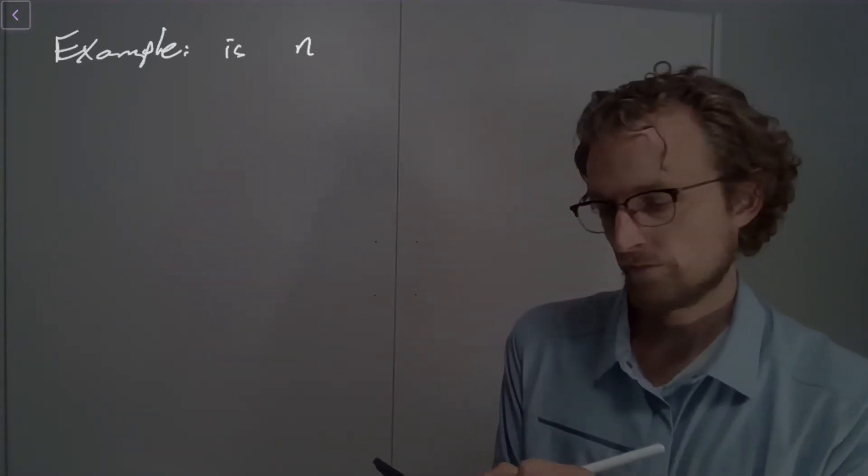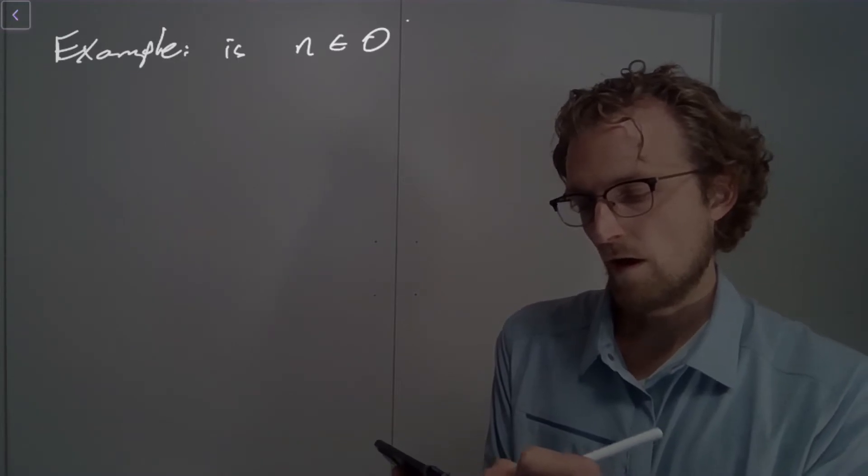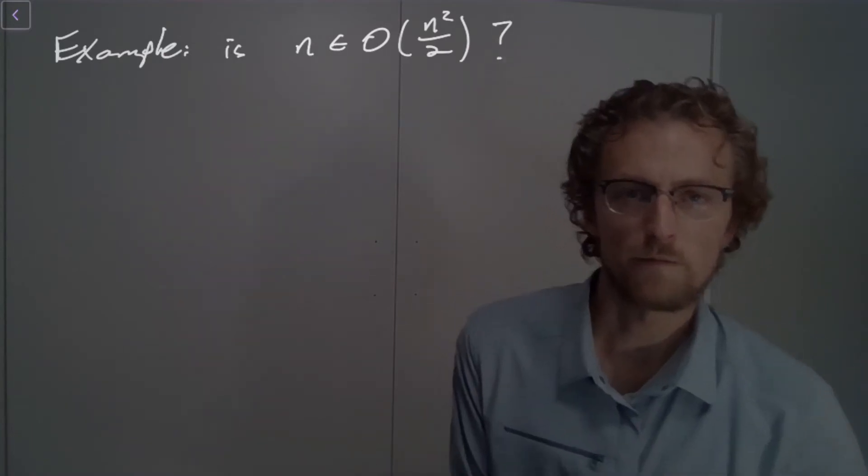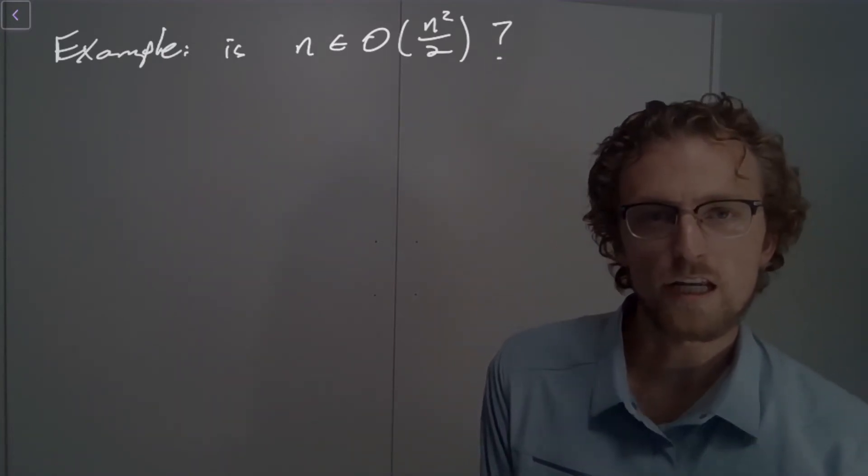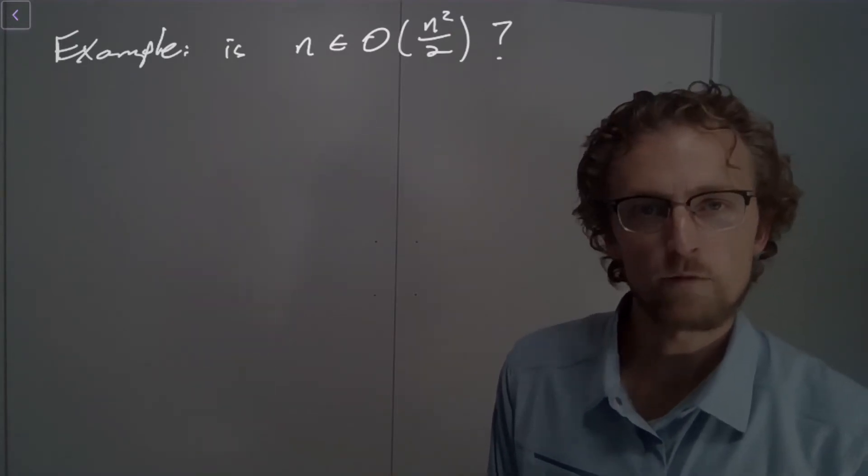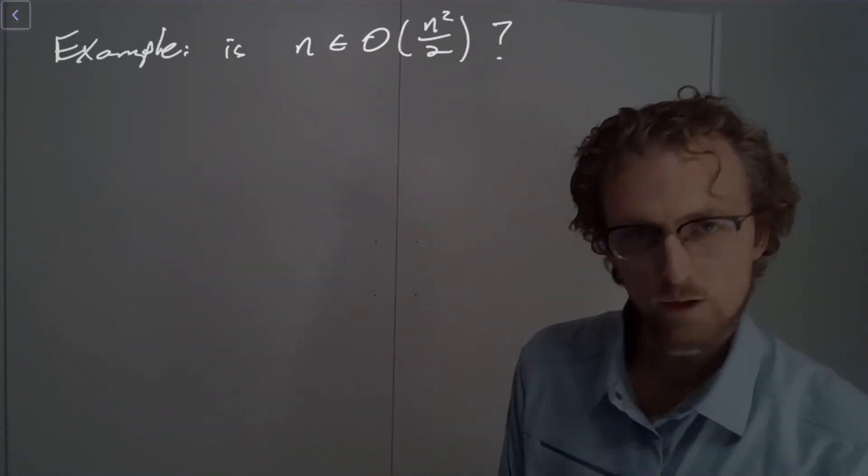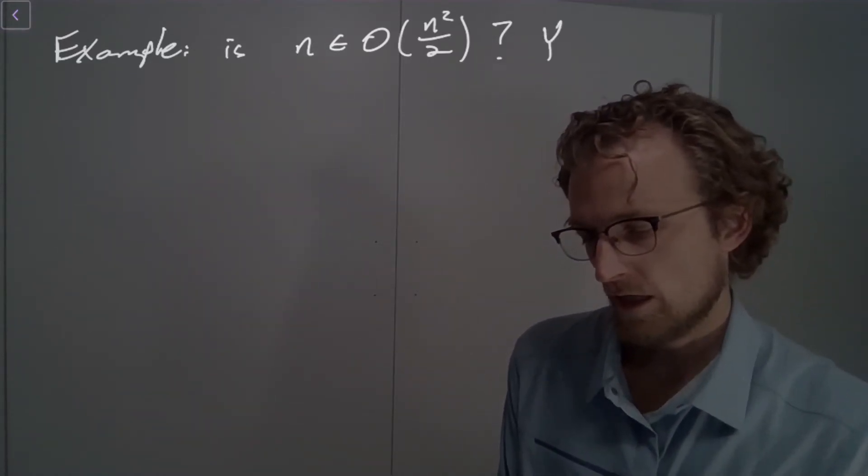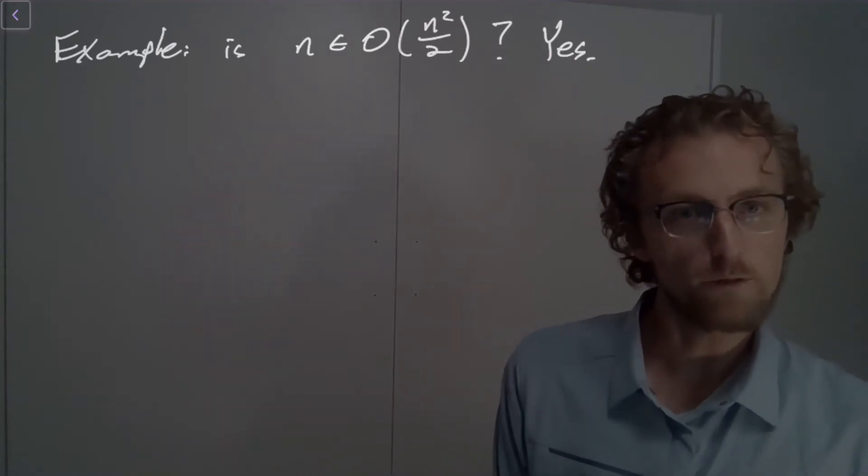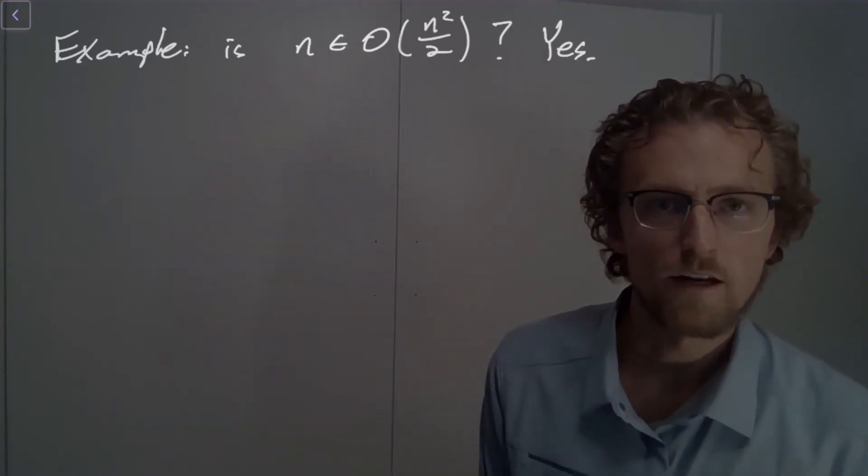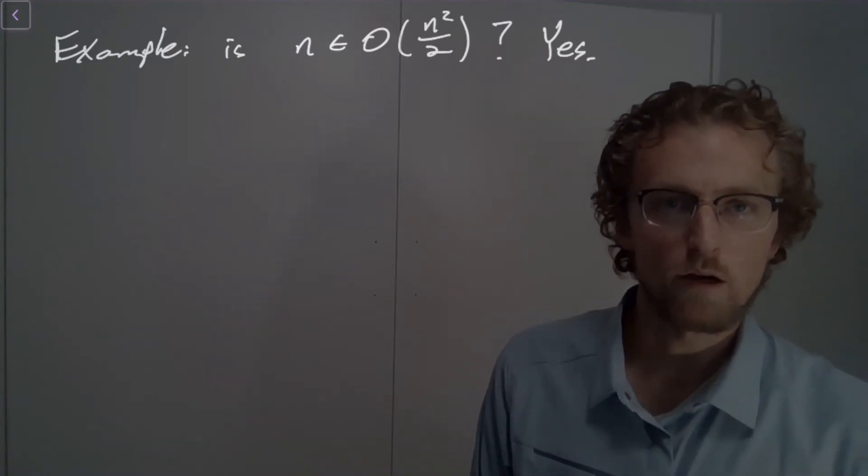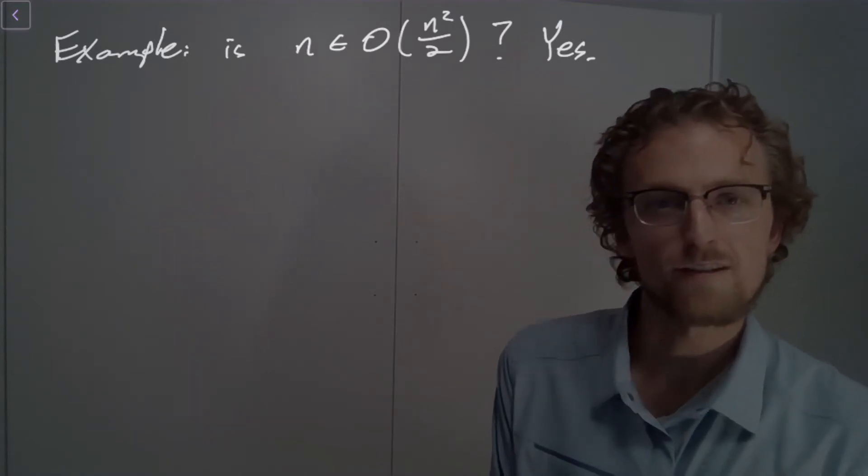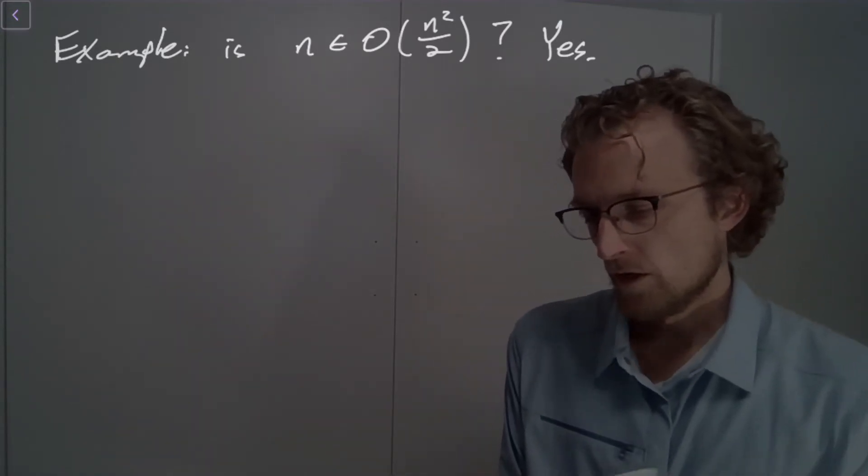Is n big O of n squared divided by 2? And so as the course goes on, you're going to get used to saying yes, obviously, because we've got n raised to the power of 1 on the left and n raised to the power of 2 on the right. But let's show this formally. So the answer is yes. And that might feel obvious to you. But if something's ever obvious, you should go try to prove it, to show yourself why it's obvious, or to actually prove to yourself that it is obvious, that you're not just making assumptions that aren't worth making.